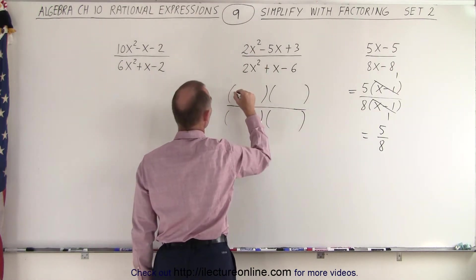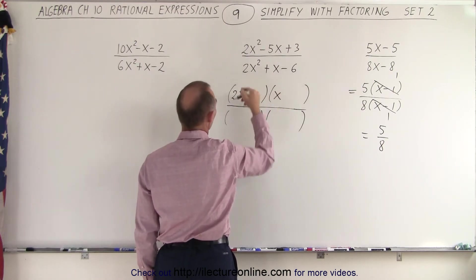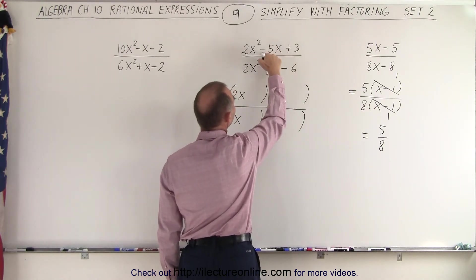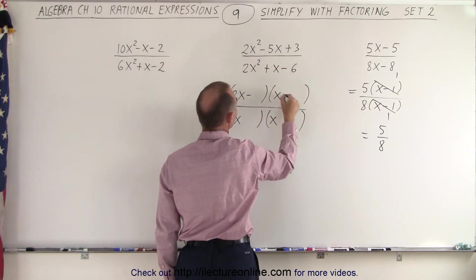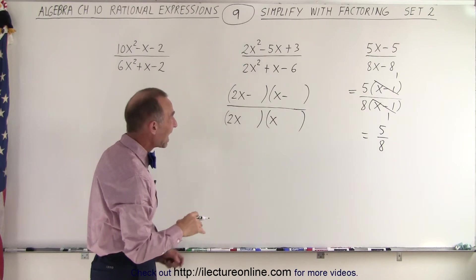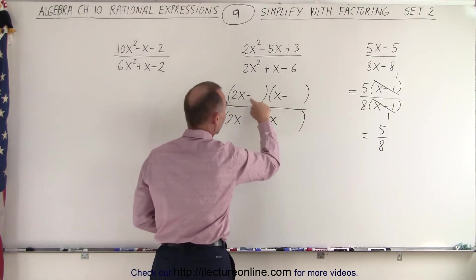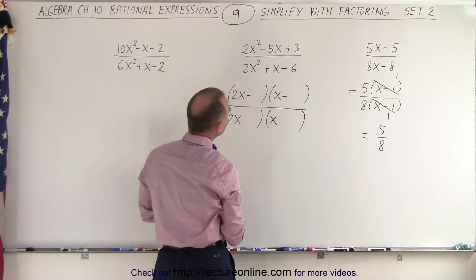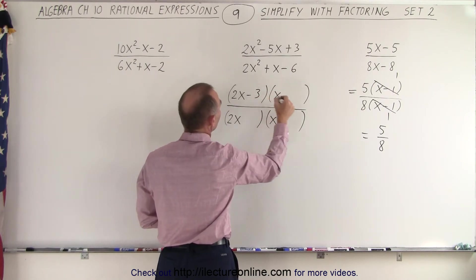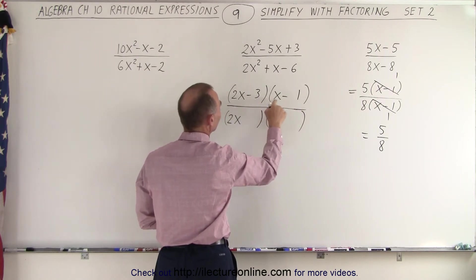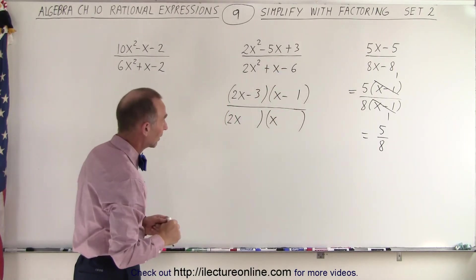Since we have a 2x squared here, that means we're going to need a 2x and an x. And the denominator, again, a 2x and an x. On the signs, notice that this is positive and this is negative, which means they both must be negative. And now we're looking for two numbers in the numerator that when we multiply we get 3. When we add the product of the inner terms and the product of the outer terms, we get negative 5. Let's see here. If we put the 3 here and the 1 there, 2x times the negative 1 is negative 2. Negative 3 times x is negative 3. Negative 2, negative 3 adds up to negative 5. Looks like that's the correct combination.